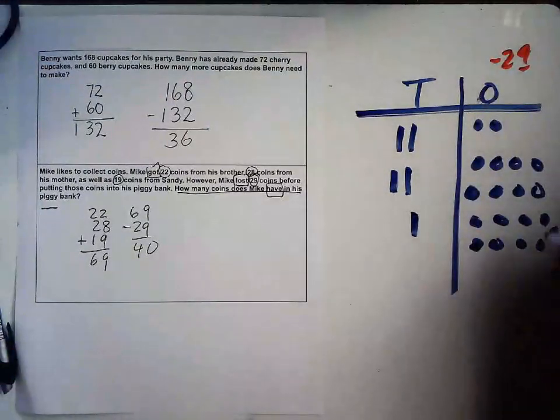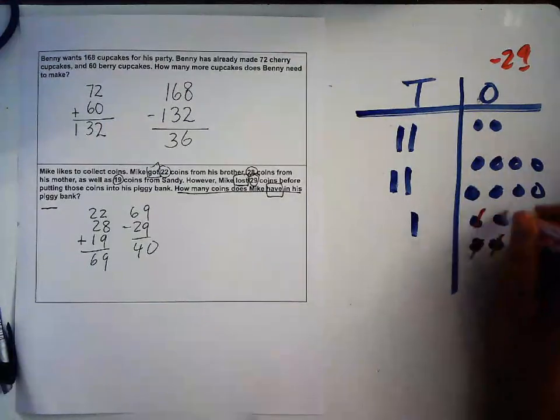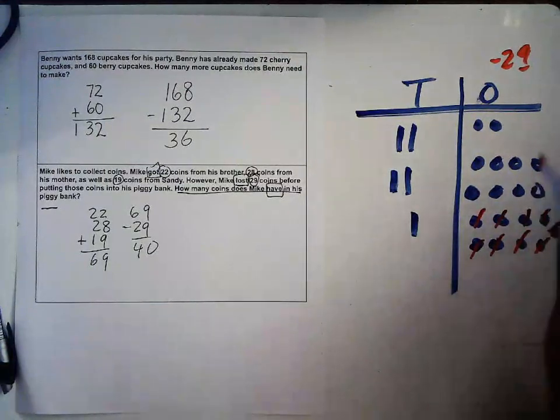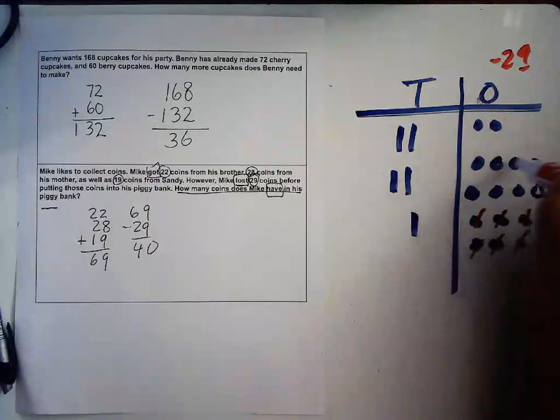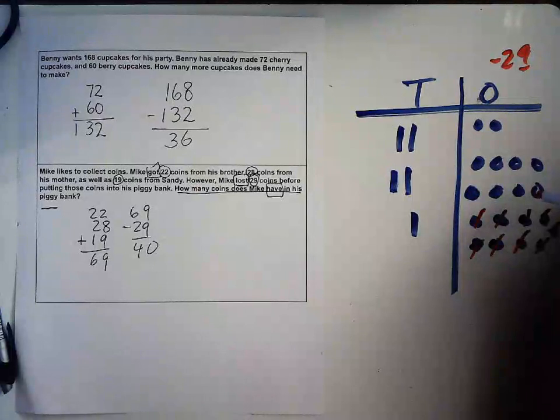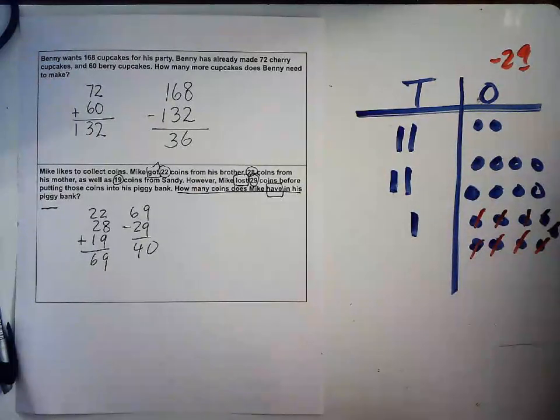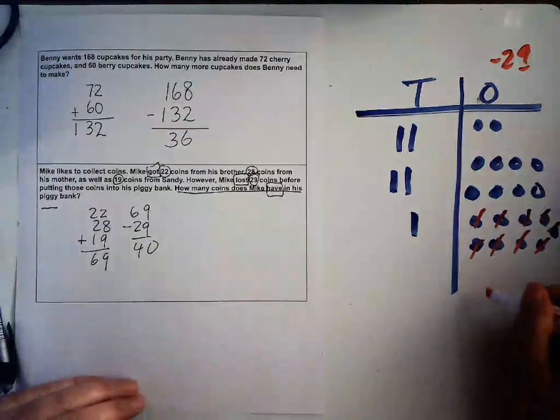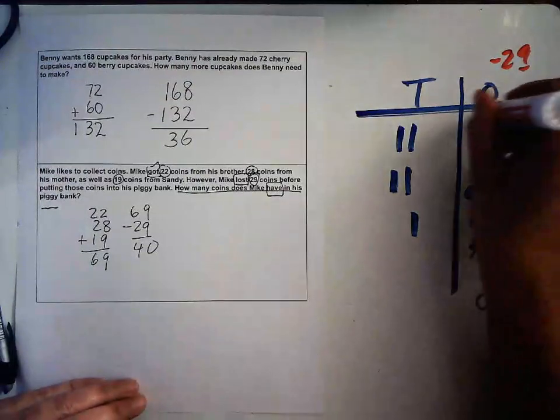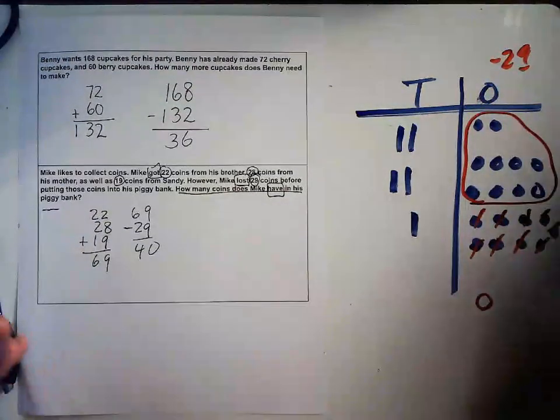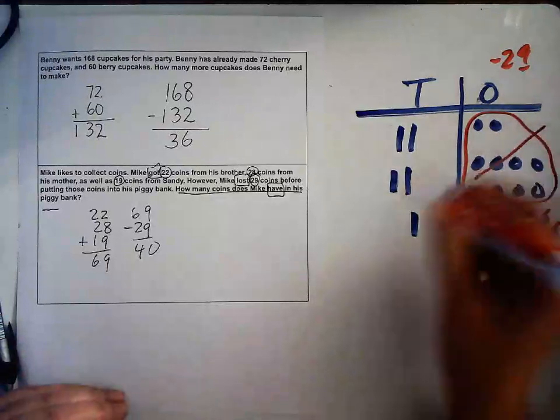I'm going to subtract the 29 that he lost. First I'm going to go with my ones, so 1, 2, 3, 4, 5, 6, 7, 8, 9, and he's left with 1, 2, 3, 4, 5, 6, 7, 8, 9, 10. Wait, I cannot write 10 here. I can't have this 10 right here. This 10 has to go over here.